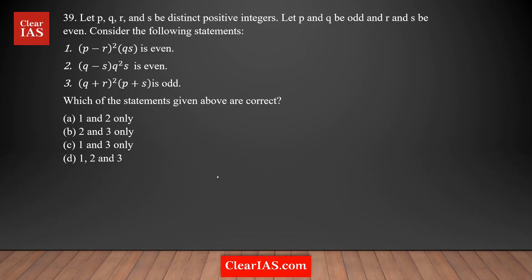Let's analyze question number 39. This seems like a complicated question but it's actually very easy to solve. You have p, q, r, and s — four distinct positive integers — where p and q are odd numbers and r and s are even numbers. There are three statements given, and two approaches you could use for these types of questions.